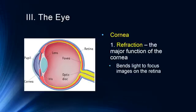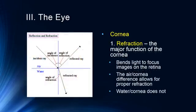The primary function of the cornea is refraction — simply the bending of light rays. Light strikes the cornea and is bent significantly to focus on the back of the retina, particularly at the fovea. It's the air-cornea difference that allows for a significant amount of refraction. Our corneas are not different enough from water to allow significant refraction underwater, which is why we can't see clearly underwater without goggles. Goggles reinstate that air-cornea difference.